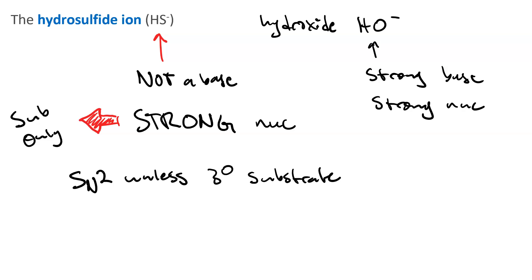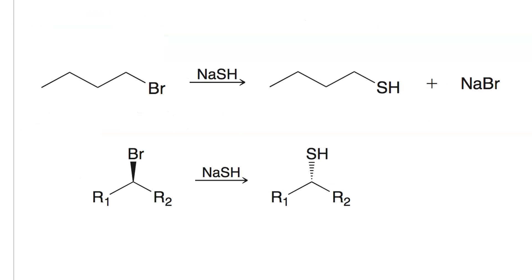If it's tertiary, it'll go SN1 because of sterics. So if you have an alkyl halide and you react it with sulfhydride, you get a thiol.